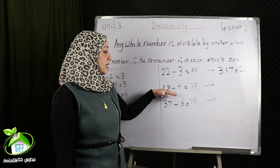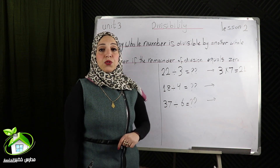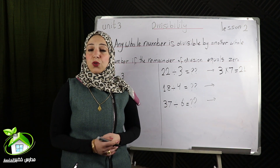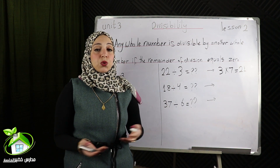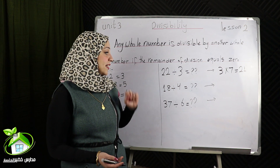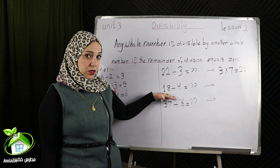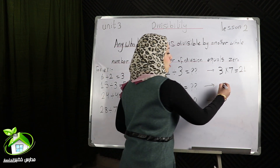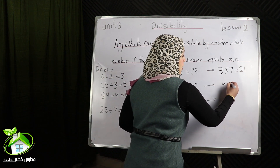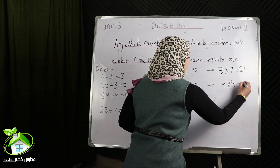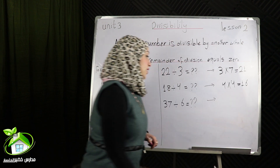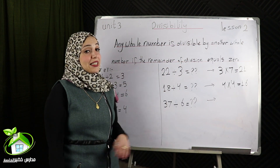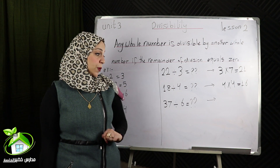Another one: 18 divided by 4 equals what? I can't find 18 in the timetable of 4. So what can I do? I will get the nearest number to 18 in the timetable of 4. Yes, 16. 4 times 4 equals 16 and the remainder equals 2. So 18 is divisible by 4.